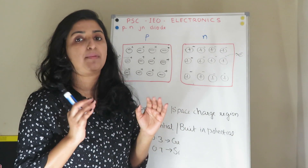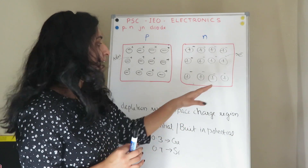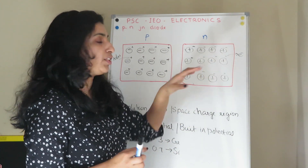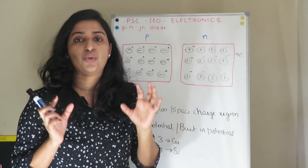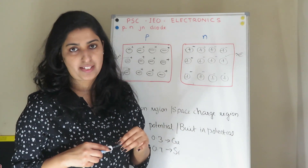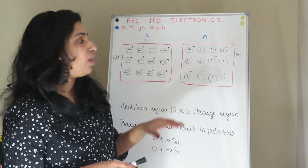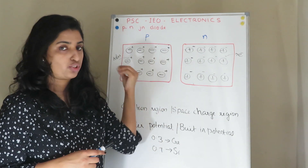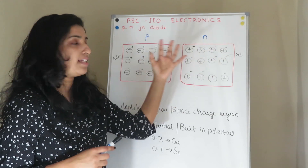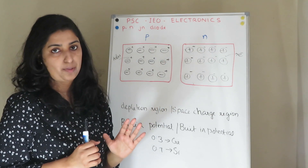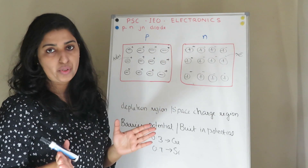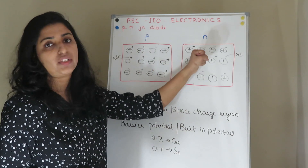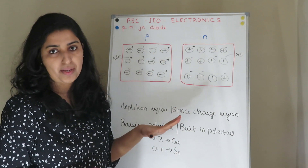If we add pentavalent impurities, we represent the majority carriers. Also, there are minority carriers. In this case, there are minority carriers of electrons, and there is a small amount of holes — those are minority carriers. Now, the P-type semiconductor is fused with this N-type semiconductor.